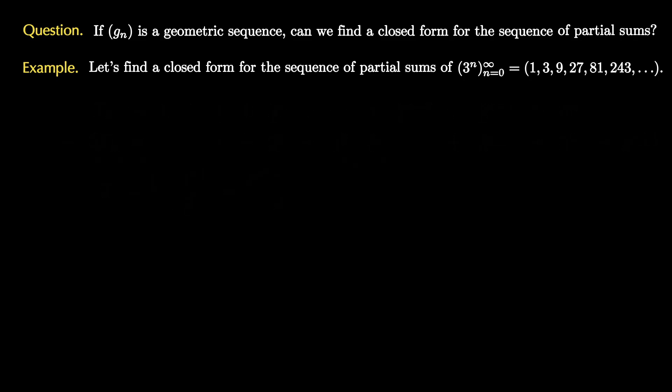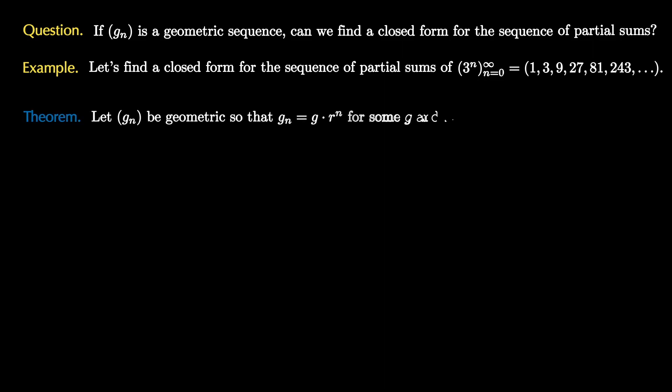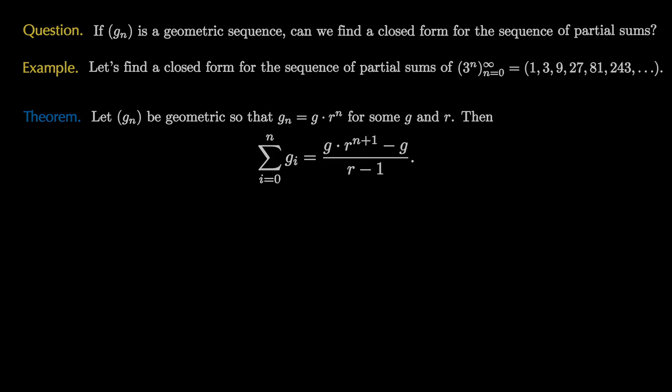A similar process works for all sums of geometric sequences, and so we have our theorem: if g_n is a geometric sequence so that g_n equals g times r to the n, then the sum of g_i where i ranges from 0 to n is given by the formula g times r to the n plus 1 minus g, all over the quantity r minus 1.